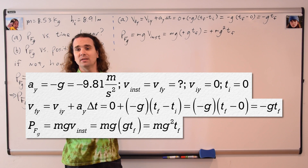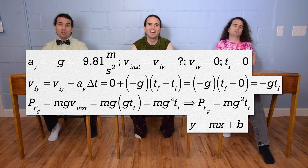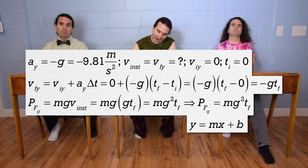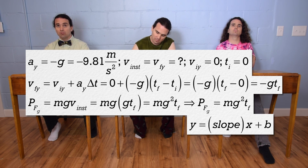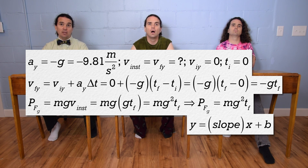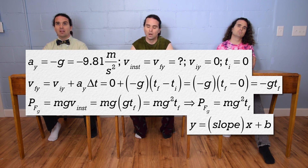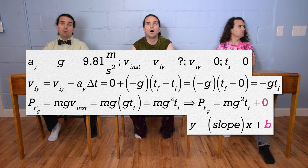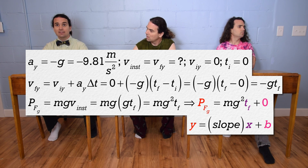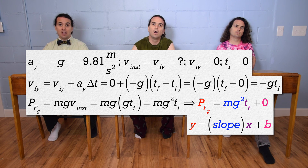Will the graph be linear? The slope-intercept form of a line is y equals slope times x plus b. Comparing that to power equals mass times acceleration due to gravity squared times time final, the y-intercept is zero. With power on the y-axis and time on the x-axis, there is a linear relationship and the slope is mass times acceleration due to gravity squared. So the answer for part A is yes — instantaneous power as a function of time will be linear.